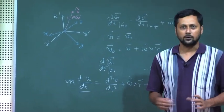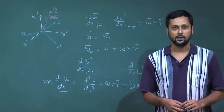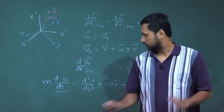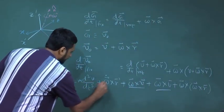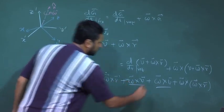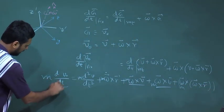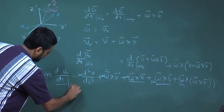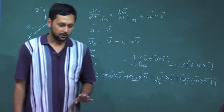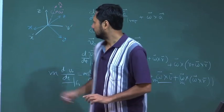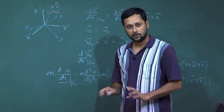In the non-relativistic world, mass is invariant under any coordinate transformation. So if we multiply both sides of this equation by mass m, we get a mass term everywhere. Look at this term m dv/dt measured with respect to the fixed coordinate system. Newton's law is valid in an inertial frame — which in this case is the fixed coordinate system. The rotating coordinate system is not an inertial frame.